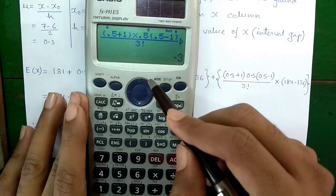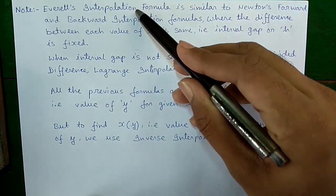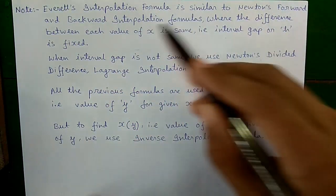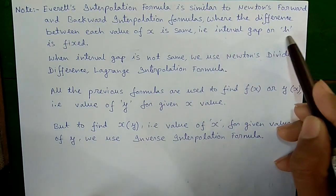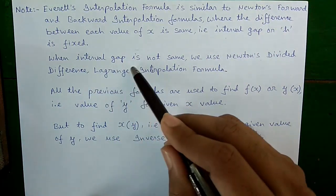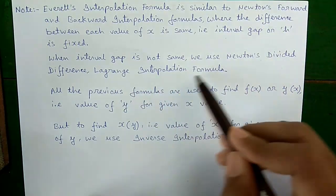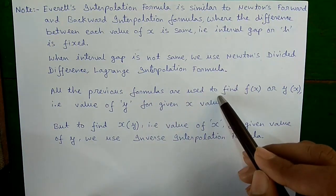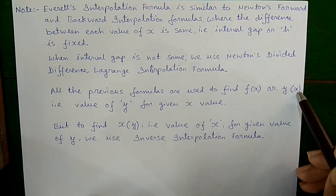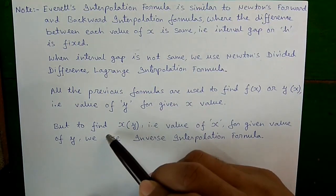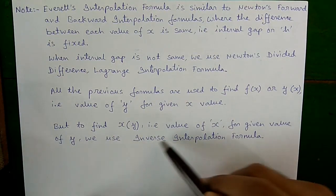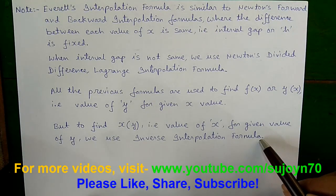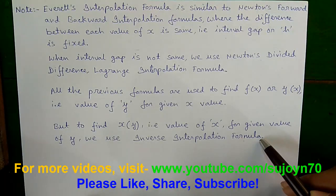Some notes: Everett's interpolation formula, like Newton's forward and backward interpolation formulas, requires equal interval gaps (same h). When the interval gap is not equal, we use Newton's divided difference or Lagrange interpolation formula. All these formulas find f(x) for a given x. To find x for a given y value, we use inverse interpolation. Links to videos on all these methods are in the description below. Thanks for watching — see you in the next video.